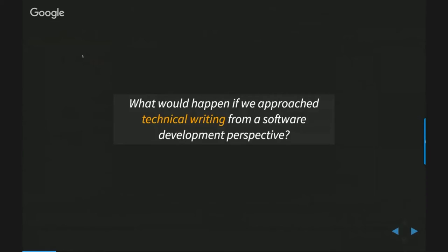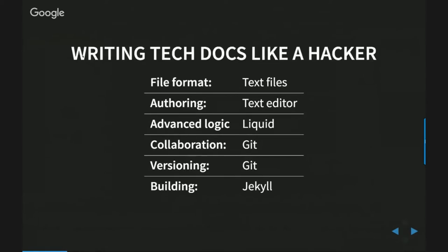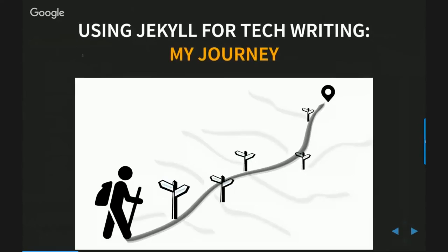So what does writing tech docs like a hacker look like? Your file format is text files. You author in a text editor — could be Sublime Text, WebStorm, or even IntelliJ. For the advanced logic that so many tech writers want, you can leverage Liquid. You collaborate through version control with something like Git, and you version things that way as well, and of course you build and pull it all together with Jekyll. This talk is my journey into trying to use Jekyll for technical writing — I'm going to go through each of these details and share how I tried to solve them. I'm a technical writer, not a developer or UX designer, so I'm working within certain limitations.